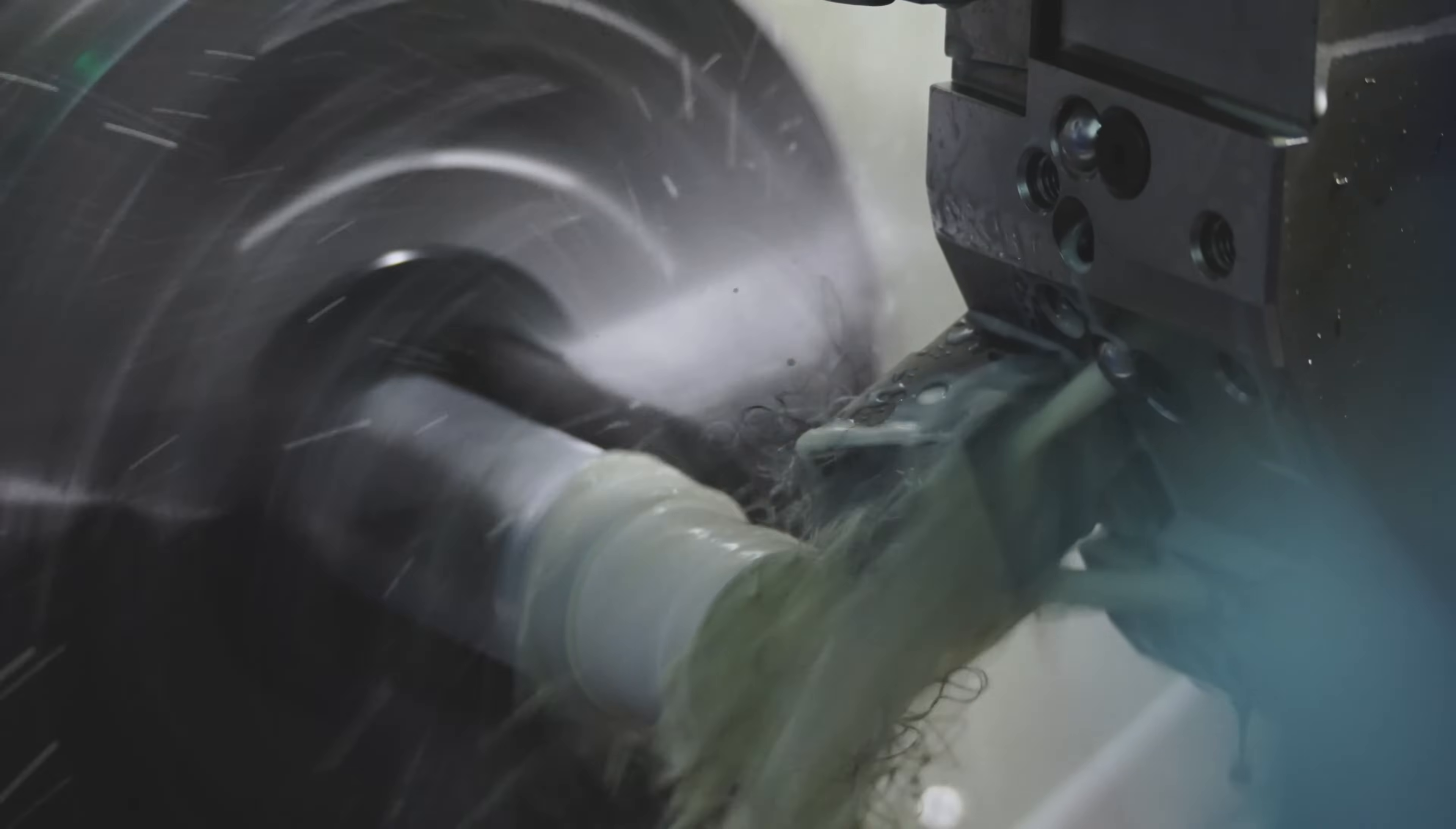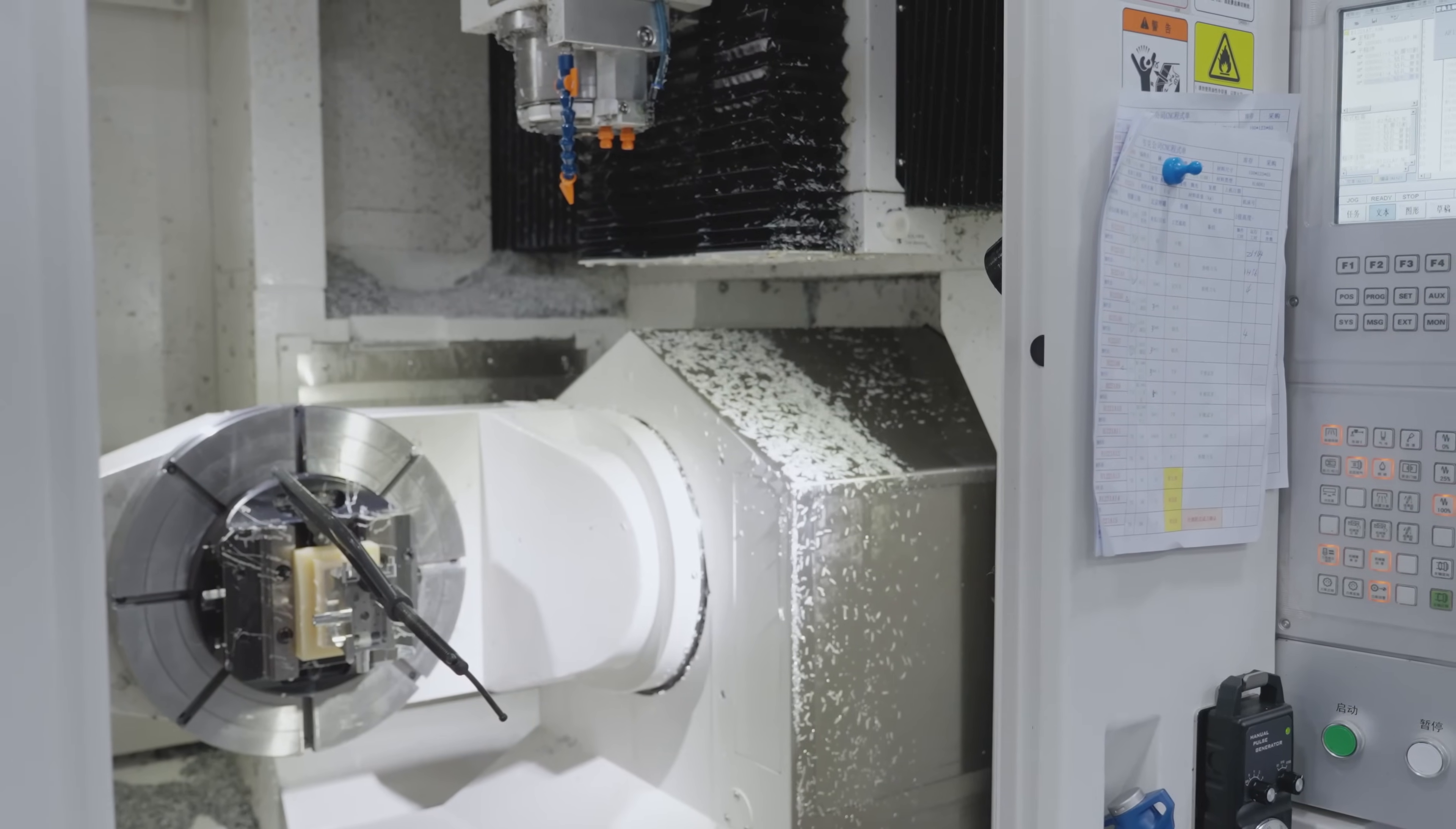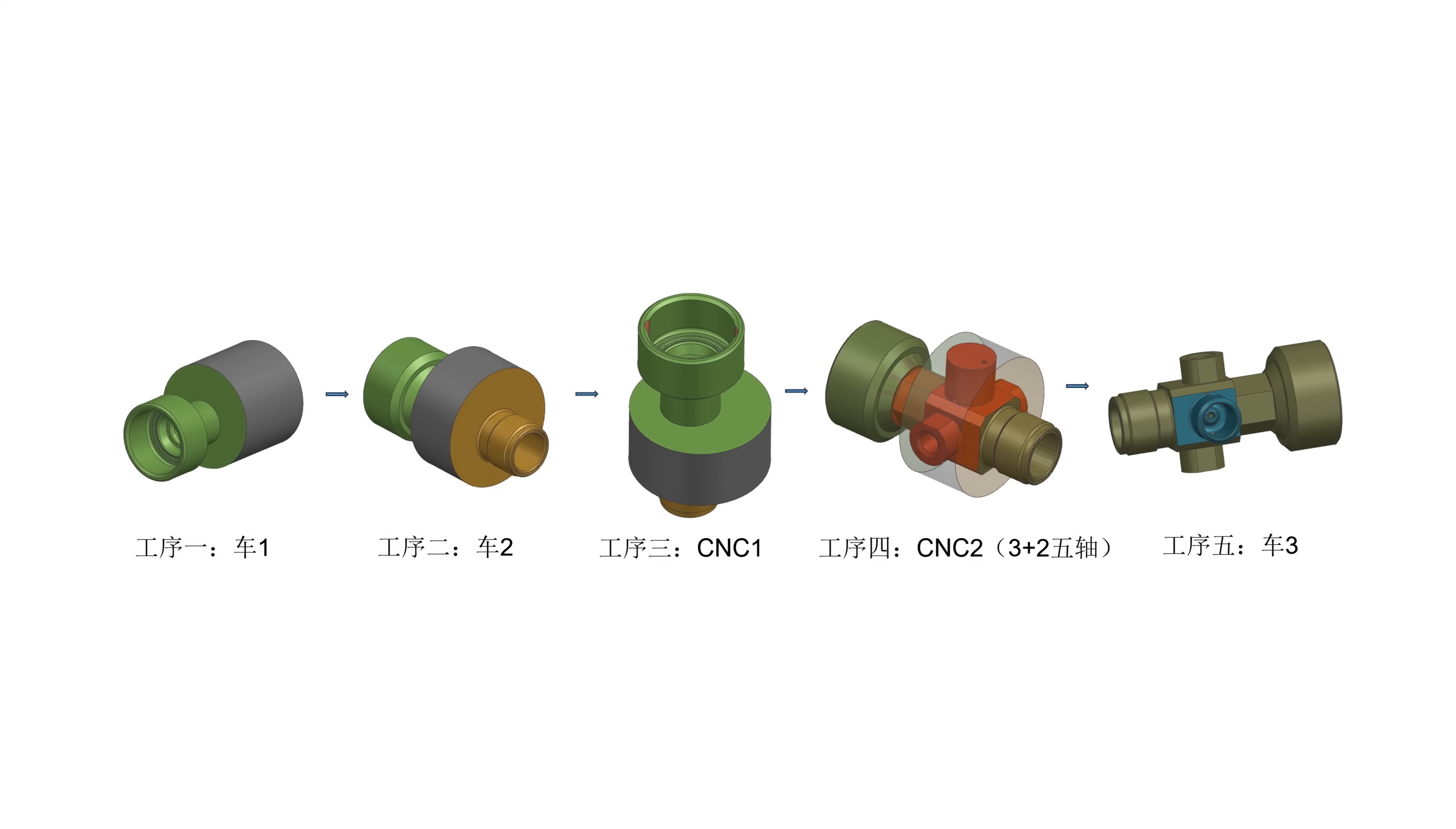The equipment type and processing route will be chosen according to the part structure and the workpiece clamping fixture will be designed too. This workpiece needs to be processed in five steps. Therefore, the process flow diagram will be designed accordingly.